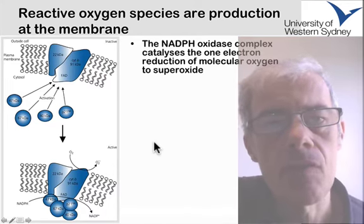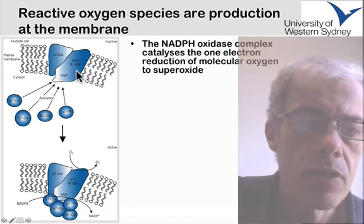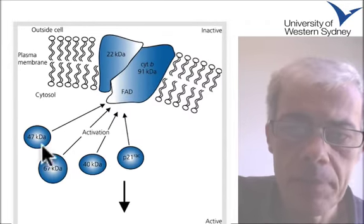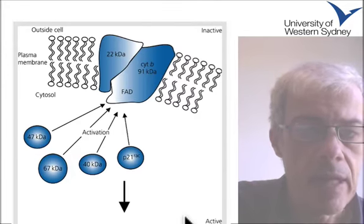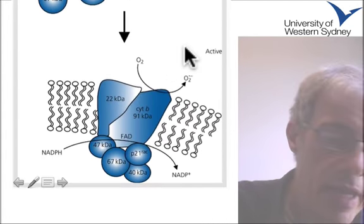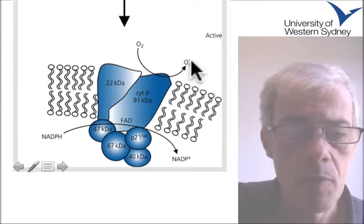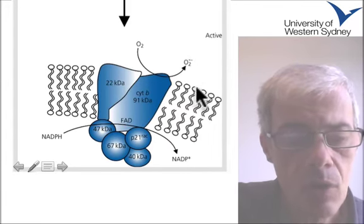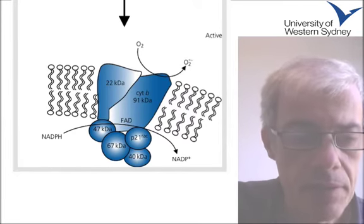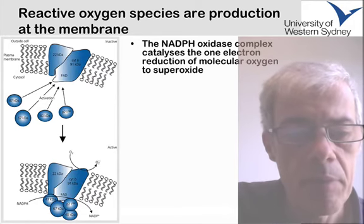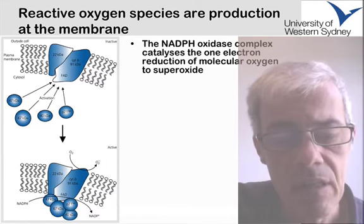One of the major sources of reactive oxygen species derives from the NADPH oxidase complex. The NADPH oxidase is able to convert molecular oxygen into superoxide, and this oxidative burst generated by the cells is used to kill off bacteria. So it's been known for a long time that reactive oxygen can be produced within cells, and also that reactive oxygen species are damaging within cells.